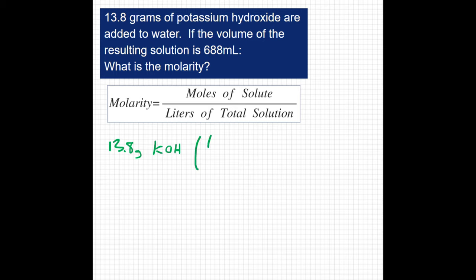Well, one mole of potassium hydroxide has a mass of 40.11 grams. If I cancel out my grams and I'm left with moles, I get 0.344 moles of KOH.